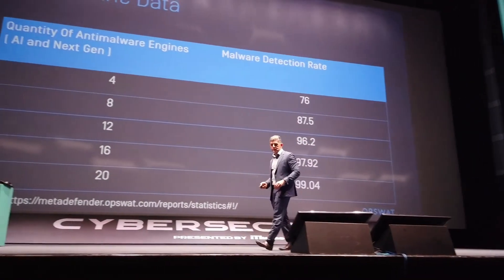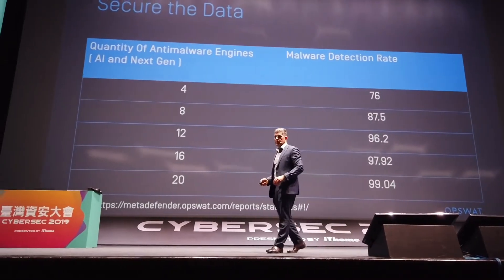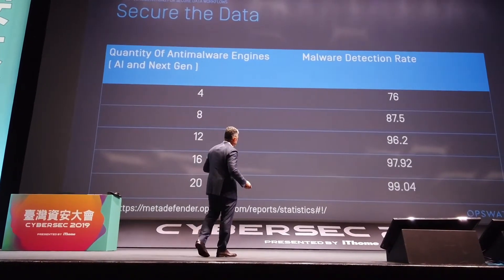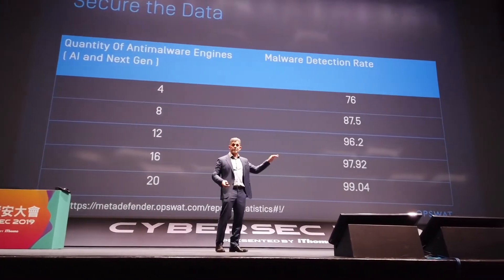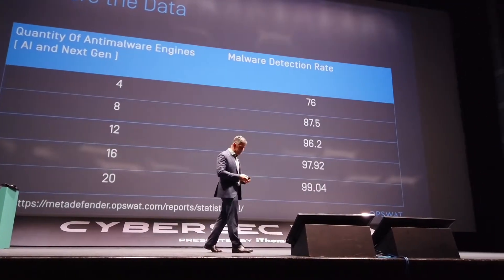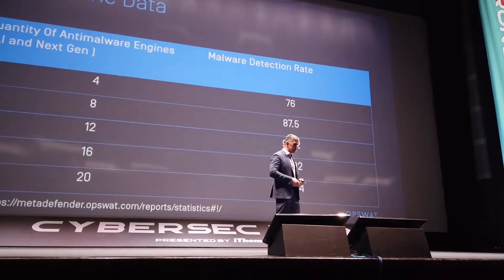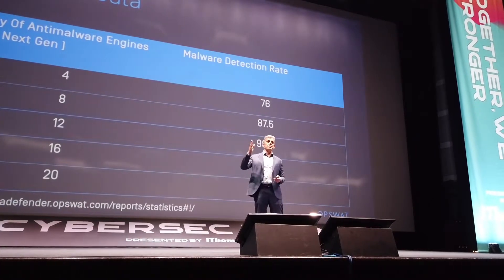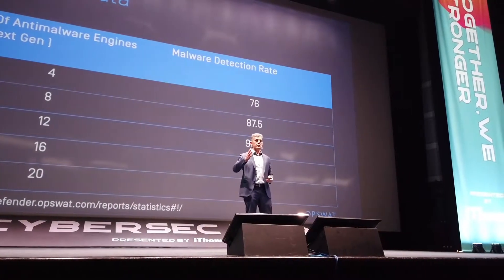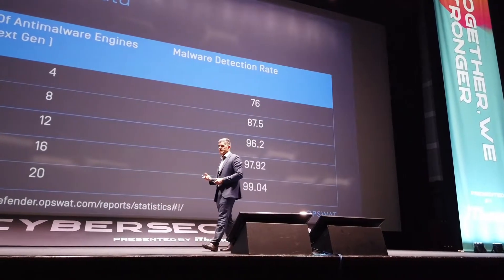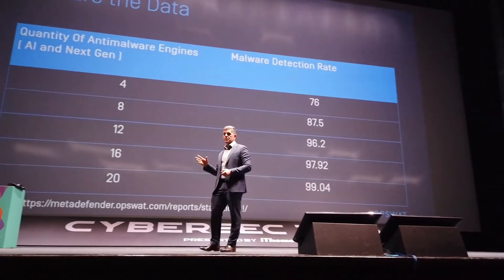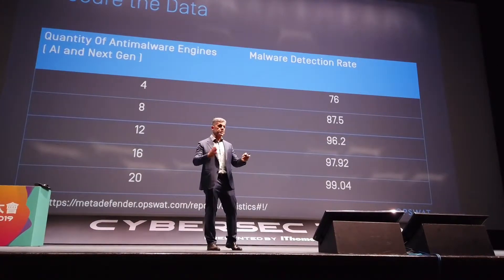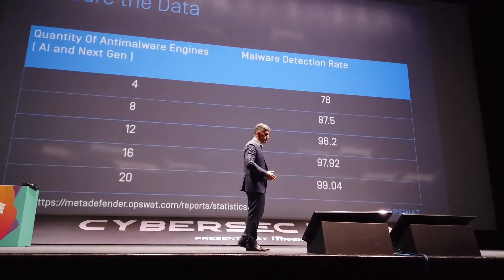Some statistics: we did tests about the efficacy of antimalware engines in static analysis. With 4 engines, you get 76% detection, and with 20 engines you can get 99.04%. It keeps going up. We also have additional research to check the detection time of an outbreak — how fast can you detect an outbreak? From our studies, you can go from around 5 days down to about 10 minutes using threat intelligence feeds, and if you have additional buffers and caches, you can also help protect the critical data.